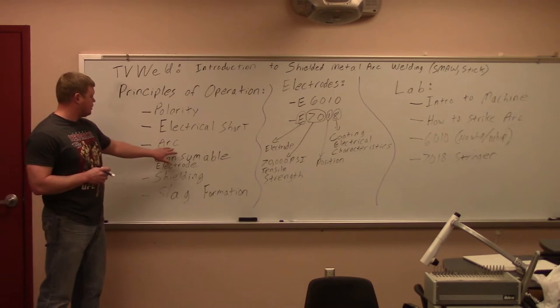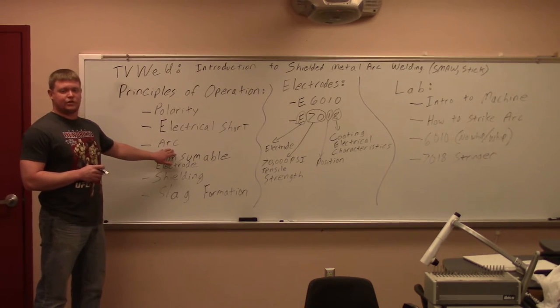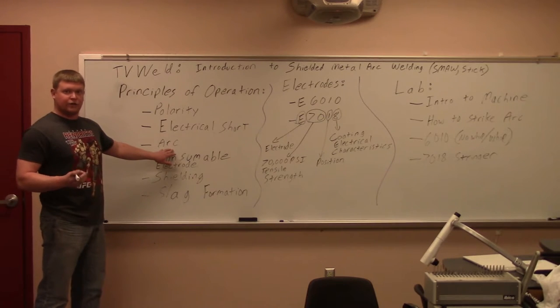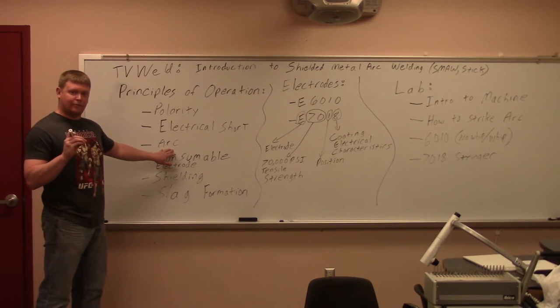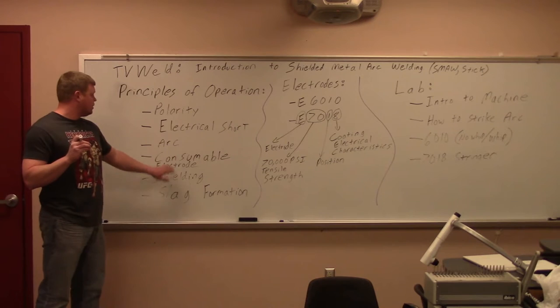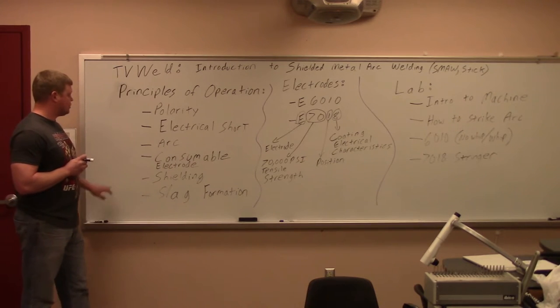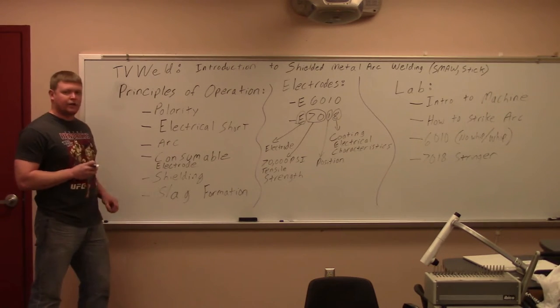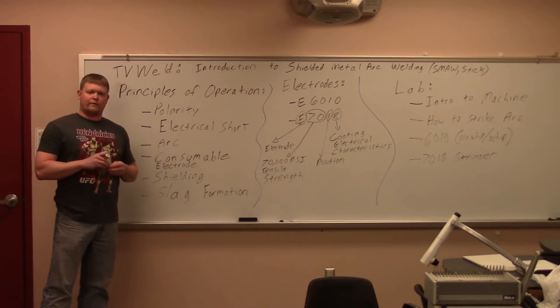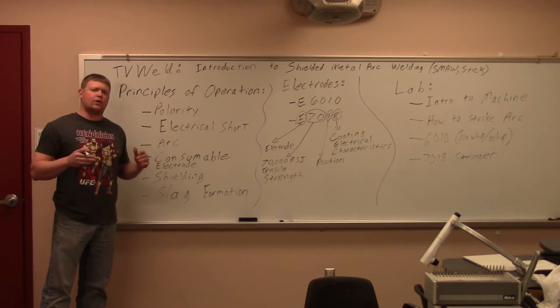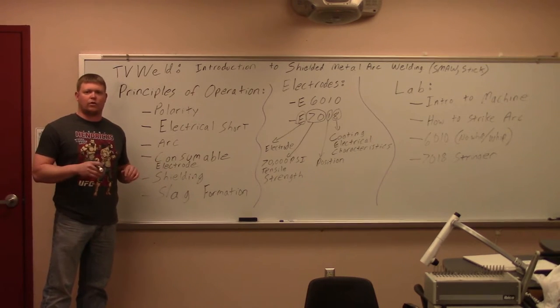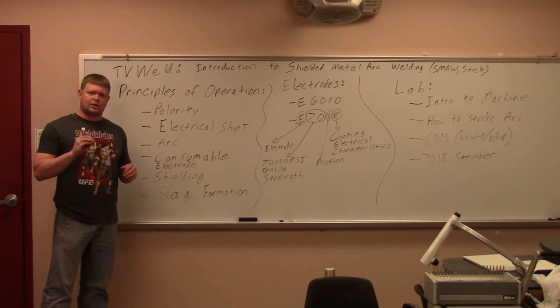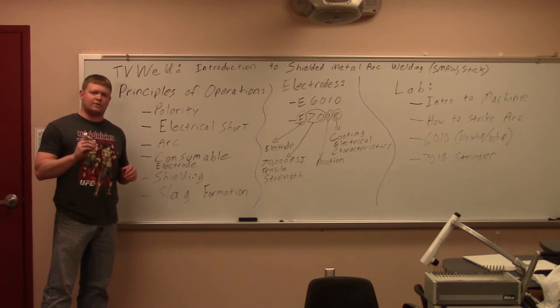You're going to get an arc, which is going to be a plasma discharge of electrical energy that floats across a small gap, which is called your arc length. The electrodes are consumable electrodes. In the middle, it's a metal core wire. So whatever you're welding, which is typically a low-carbon steel or a stainless or an aluminum, the metal core is going to match up with the base metal.